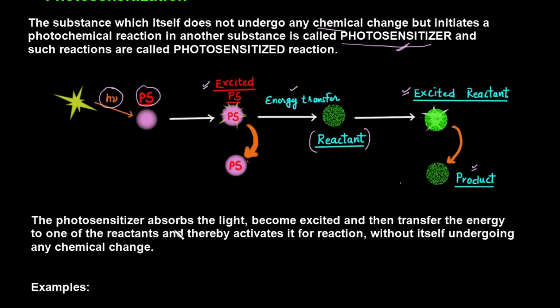The photosensitizer absorbs the light, becomes excited, and then transfers the energy to one of the reactants that was not absorbing light, and thereby activates it for the reaction without itself undergoing any chemical change. The photosensitizer comes back to its ground state after providing its energy to the reactant molecule.